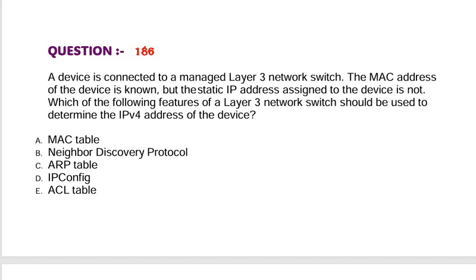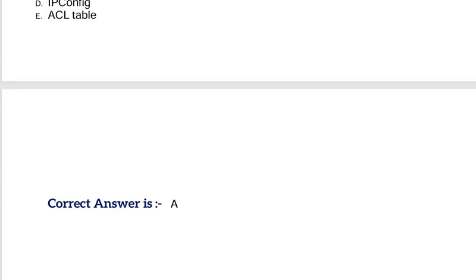Question: A device is connected to a managed layer 3 network switch. The MAC address of the device is known but the static IP address assigned to the device is not. Which of the following features of a layer 3 network switch should be used to determine the IPv4 address of the device? Option A, MAC table. Option B, neighbor discovery protocol. Option C, ARP table. Option D, IP config. Option E, ACL table. Correct answer is Option A.